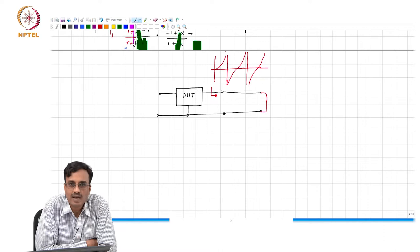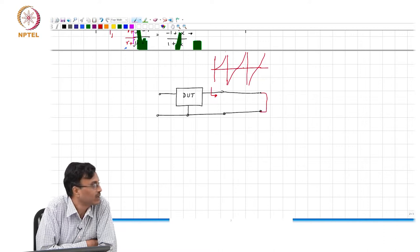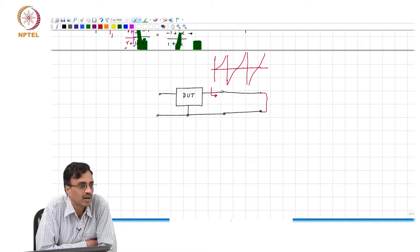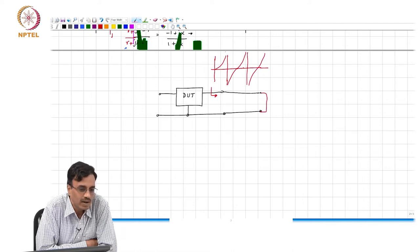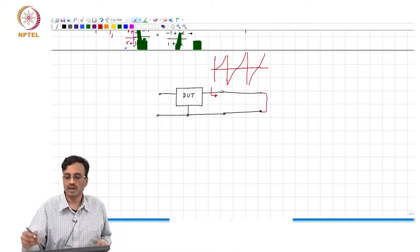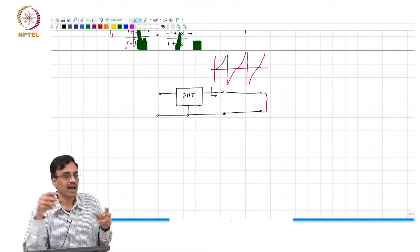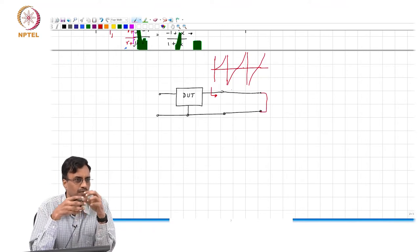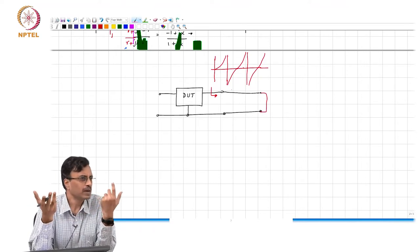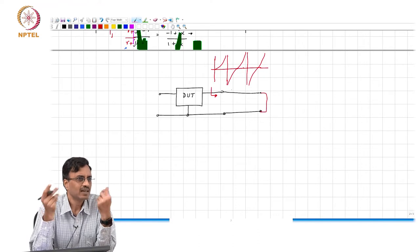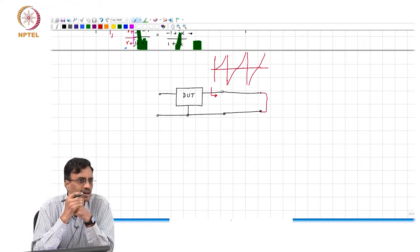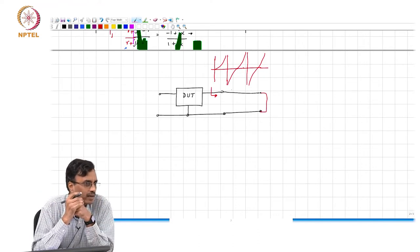A parallel LC network. Can you think of a network that becomes a short at a certain frequency? A series LC network. So you can think of this transmission line terminated with a short circuit as a combination of whole bunch of parallel LC and series LC networks.